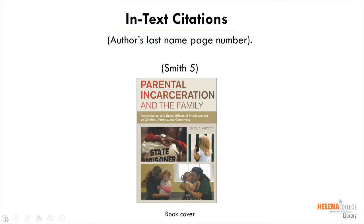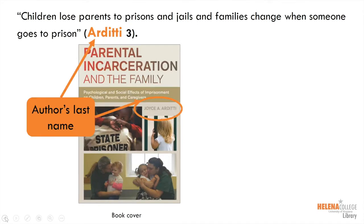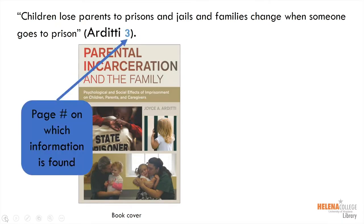Let's look at an example of this book. Here is a direct quote from the book. The citation appears in parentheses at the end of the sentence, after the closing quotation mark and before the period. The first part of the in-text citation is the author's last name. You can easily find the author's name on the cover of the book. Then include the page number where the information or quote is located.